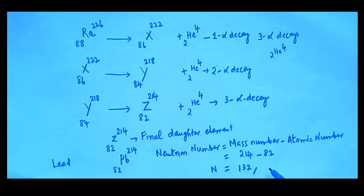So this is the answer — number of neutrons is 132. This is a direct and simple problem. Thank you.